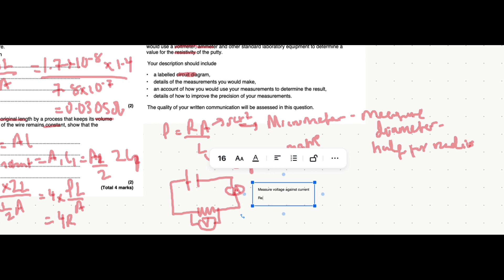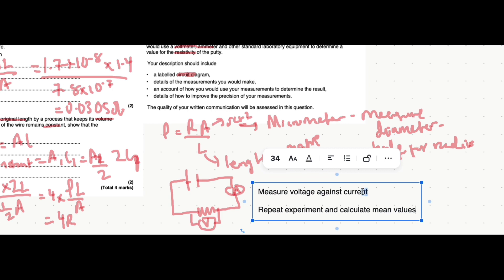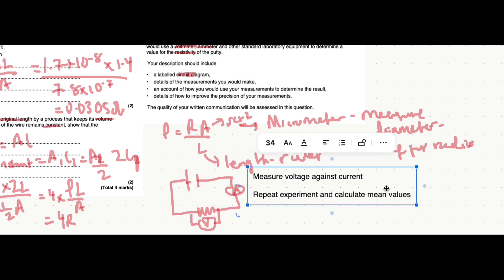what you want to say is that you want to repeat the experiment and calculate mean values. Once you've got mean values of voltage against current, there's an equation that links resistance to voltage against current. I'm sure you guys know it. It's resistance equals voltage over current. You can take the mean voltage and divide it by the mean current. And, that will give you an accurate representation of the resistance. You then multiply that onto pi r squared or the length. And, that gives you the resistivity.